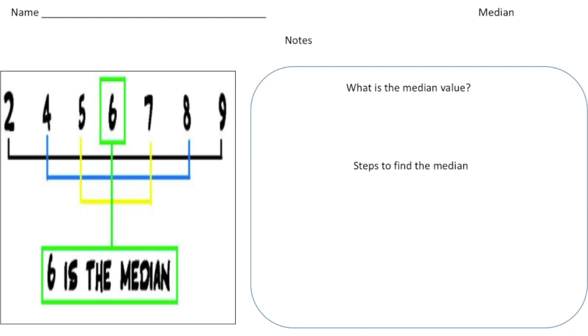But the textbook definition is the median is the middle number in a sorted list of numbers. So let's write that down. It's the middle number in a sorted list of numbers.